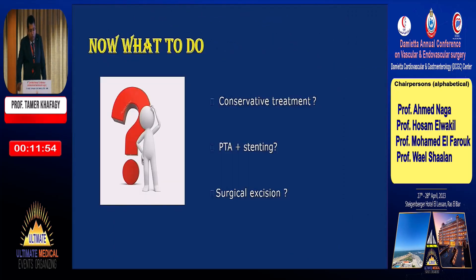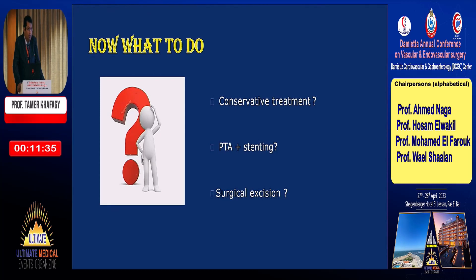Three treatment choices were considered. Conservative treatment would offer no benefit as the mass would not resolve. PTA plus stenting was rejected because the stent would likely fracture under compression from the mass. Therefore, surgical excision was chosen.